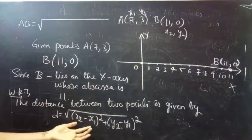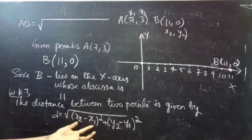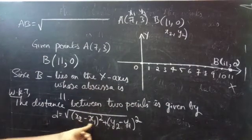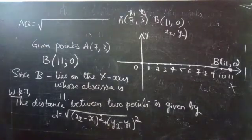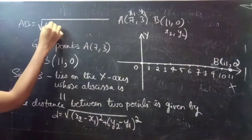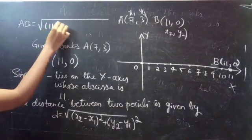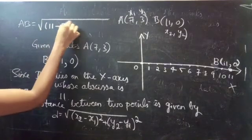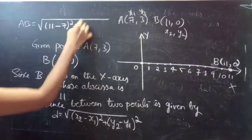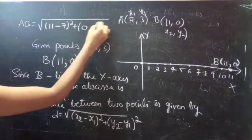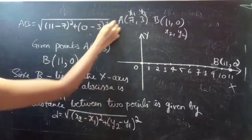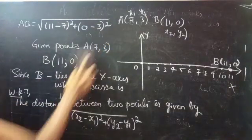So now, we will use this formula. That is, we have to substitute the values of x1, x2 and y1, y2. So you are having x2, 11, minus x1, 7, whole square plus y2, 0, minus y1, 3, whole square.